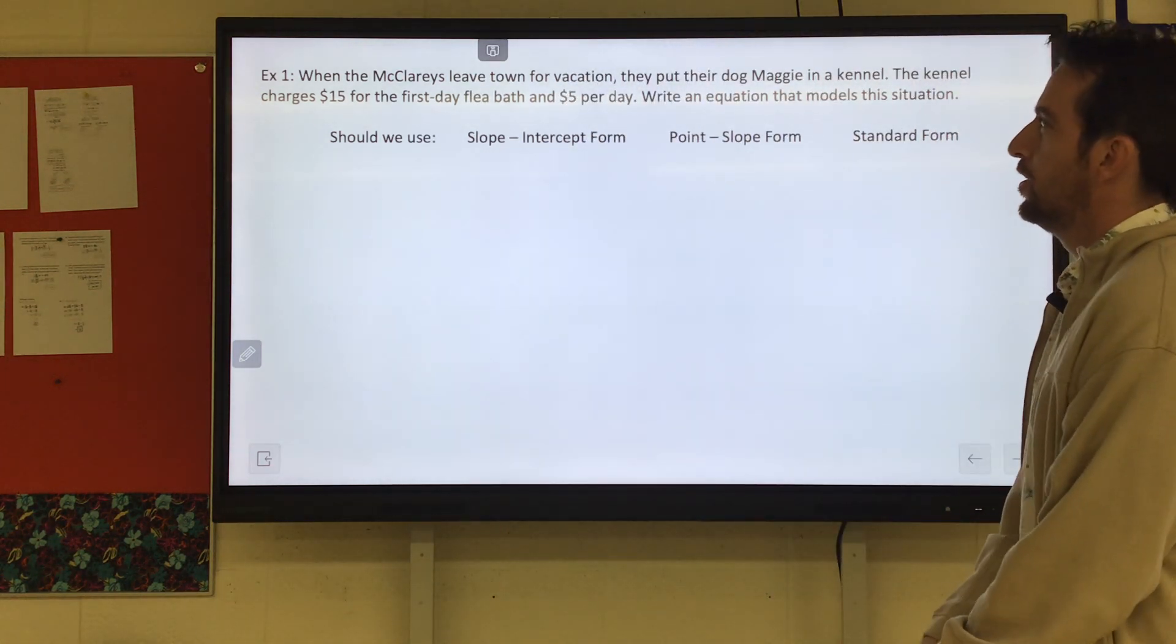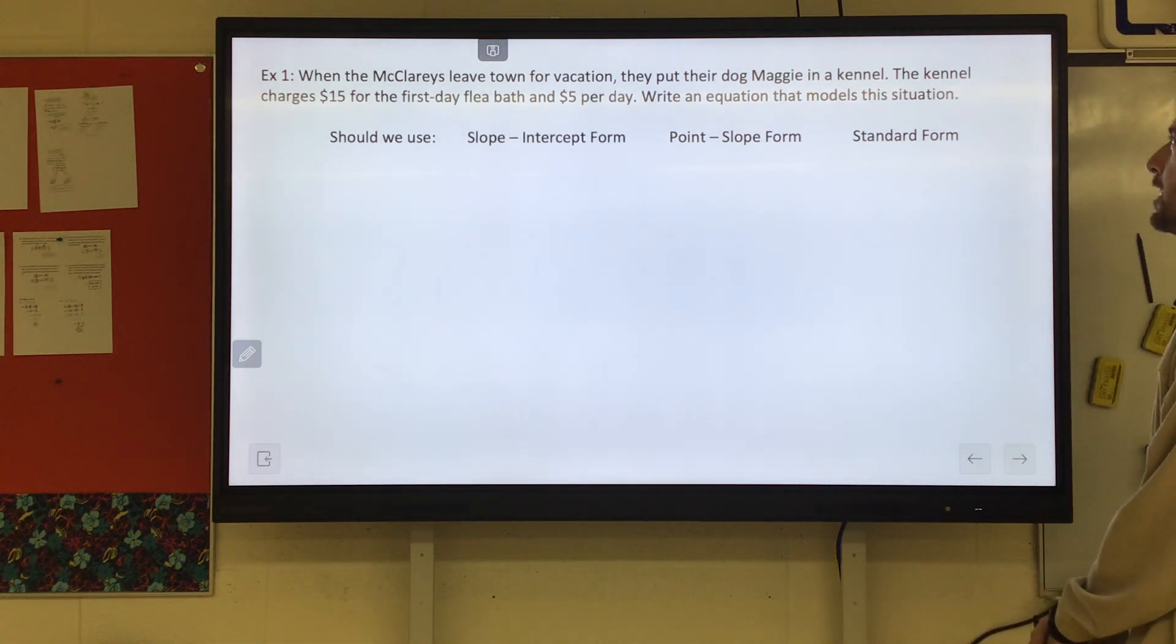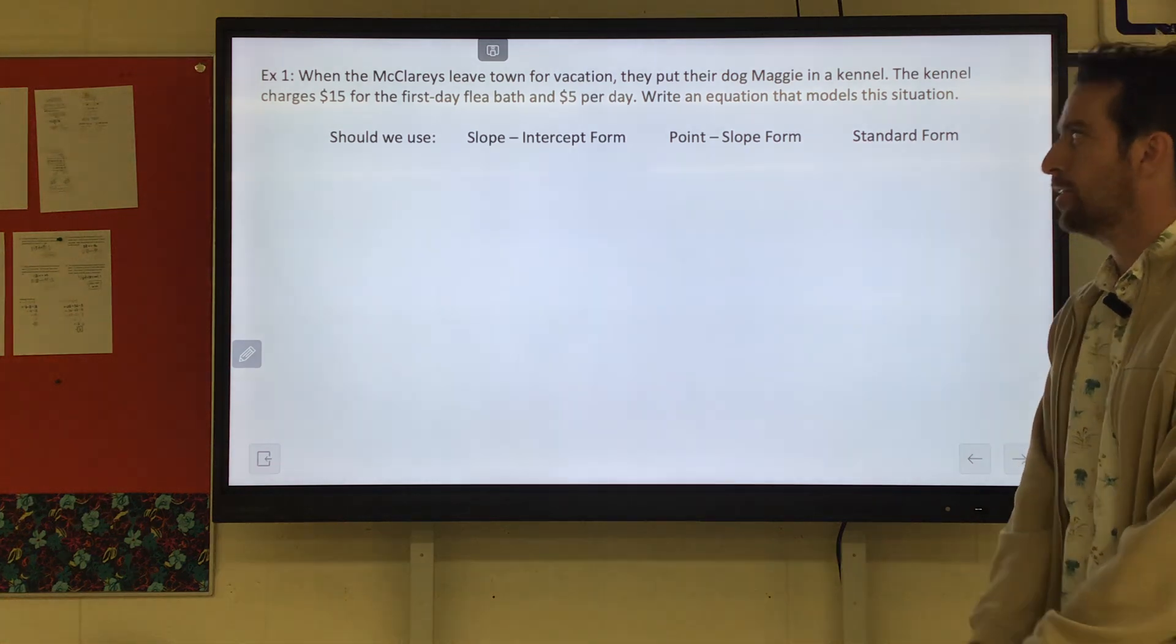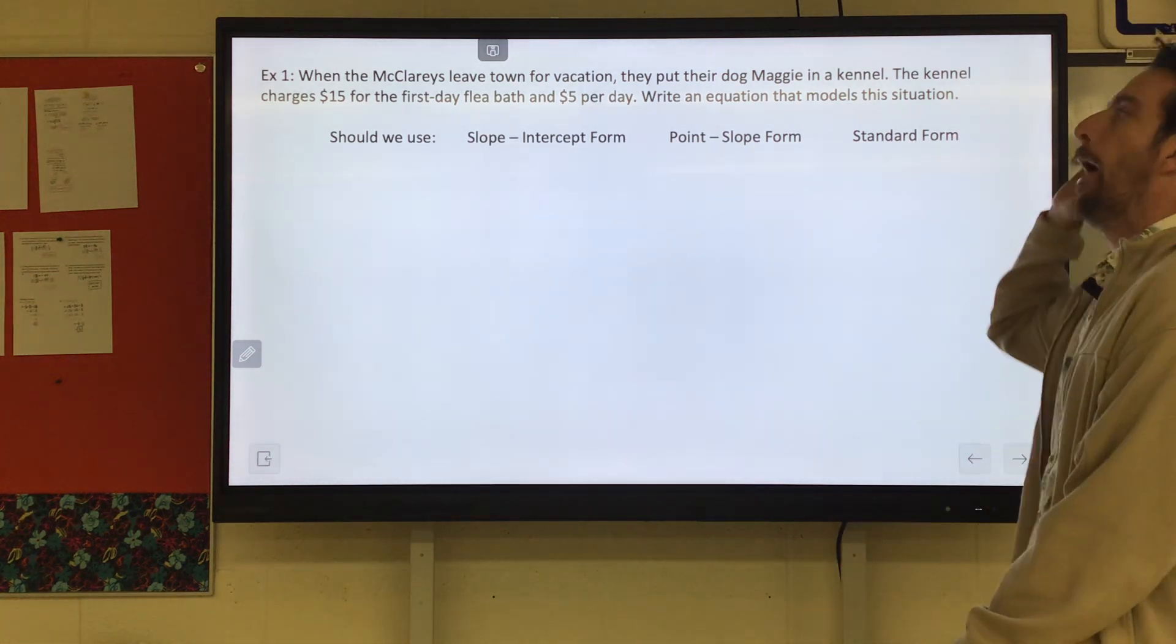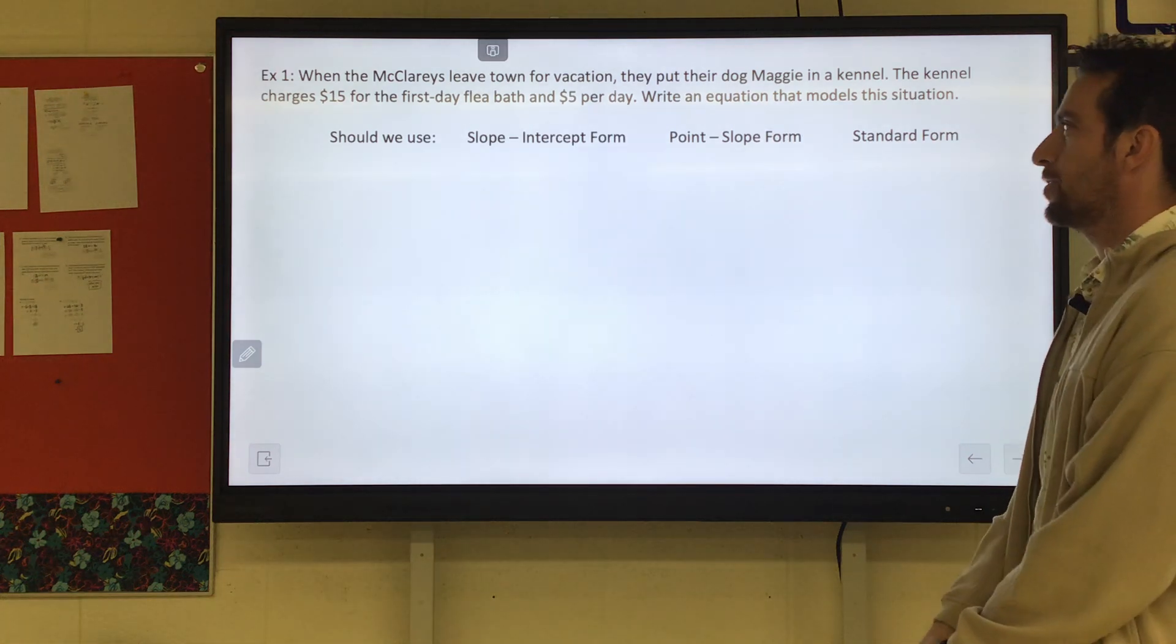Example one. When the McClareys leave town for vacation, they put their dog, Maggie, in a kennel. The kennel charges $15 for the first day flea bath and $5 per day. Write an equation that models the situation.